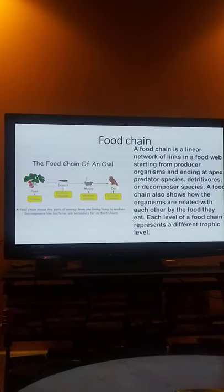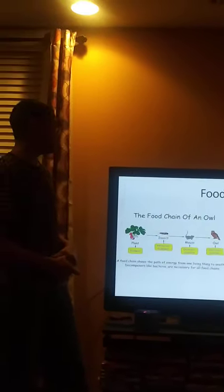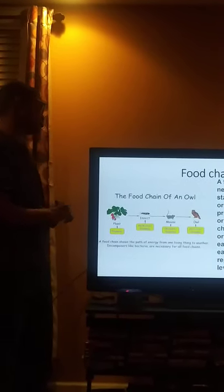What is a food chain, you might be asking? A food chain is a linear network that links any food web starting from the producer's organism and ending at an apex predator species.